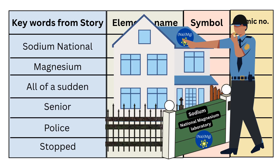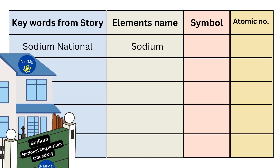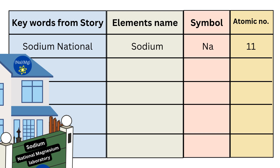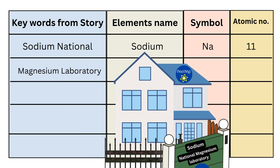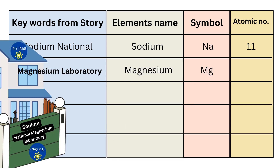When they reached near the Sodium National Magnesium Laboratory, a senior police officer stops their car. Continuing after 'near', 'sodium national' is another key word representing the element name and its symbol. Your eleventh element name is Sodium, and its symbol is Na, and atomic number is 11. The symbol is quite different from the element name — you can remember the word 'national' for the symbol Na. Now the next key word is 'magnesium', so from this you can remember the twelfth element name, that is Magnesium itself. Its symbol is Mg, and atomic number is 12.